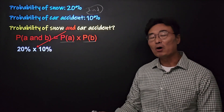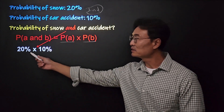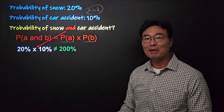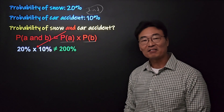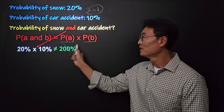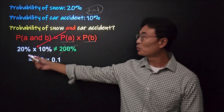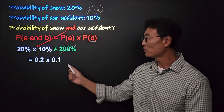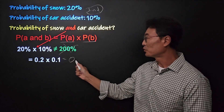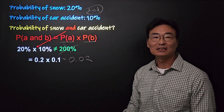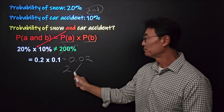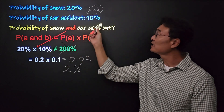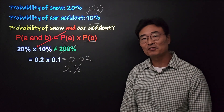What's important to point out is that when you're multiplying percents, you can't just do 20% times 10% and get 200% — imagine getting 200% chance of car accident and snow! What you have to do is change 20% into 0.2 and 10% into 0.1, then multiply to get 0.02, which converts back to 2%.